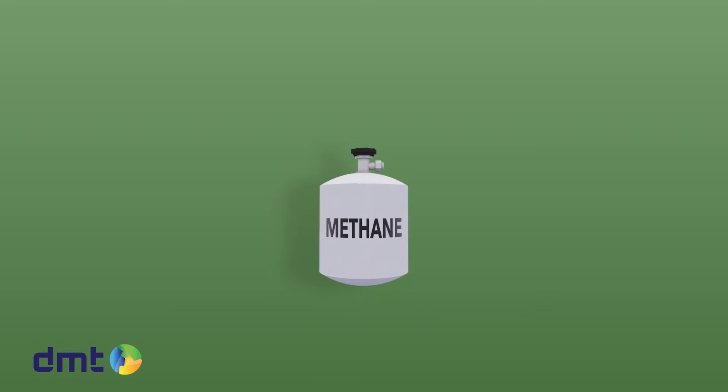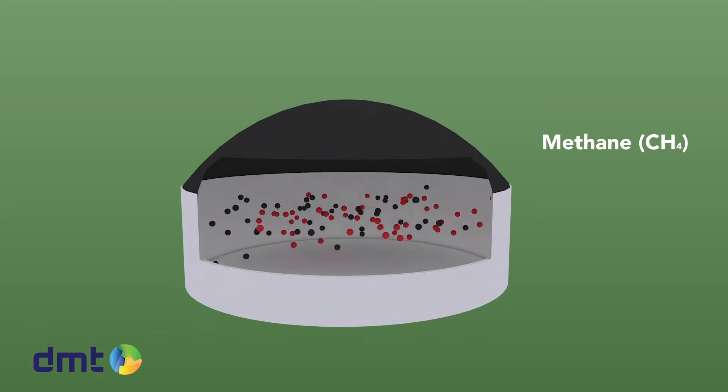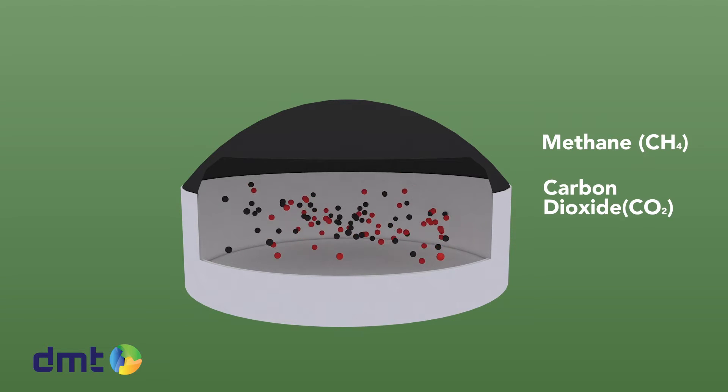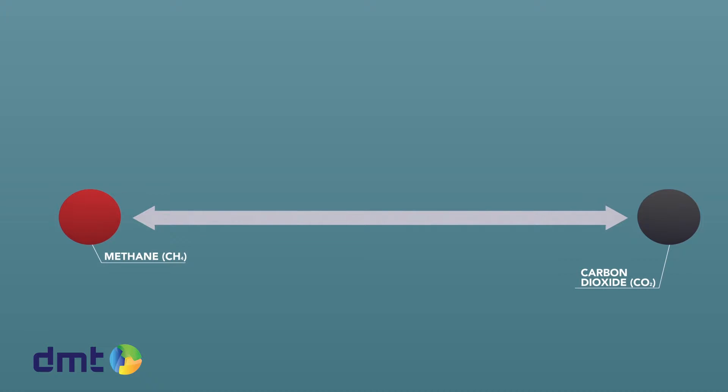It is however possible to produce natural gas in a sustainable way. This can be done by upgrading biogas. Biogas is a gas produced by digestion of biological waste products and mainly contains methane and carbon dioxide. Upgrading biogas means separating the methane from the carbon dioxide, resulting in a pure methane gas flow.